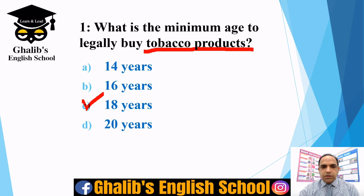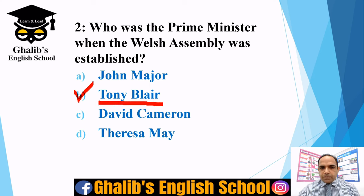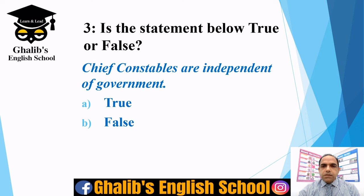Question two: who was Prime Minister when the Welsh Assembly was established — John Major, Tony Blair, David Cameron, or Theresa May? The correct option is Tony Blair. He was the Labour Party's Prime Minister when the Welsh Assembly was established in 1999, along with the Scottish Parliament.